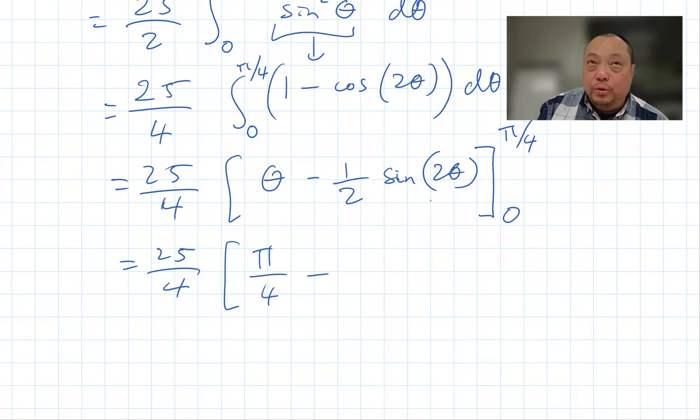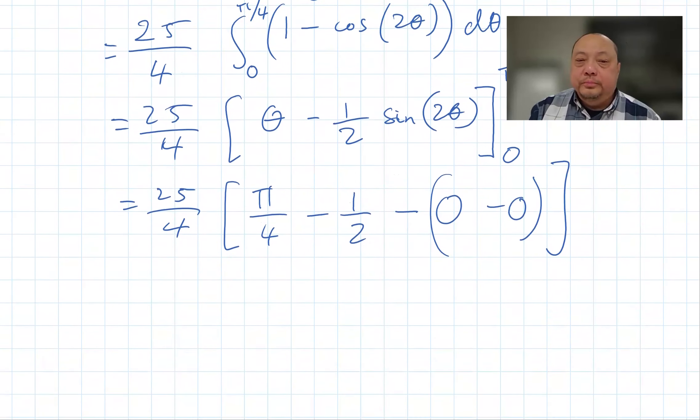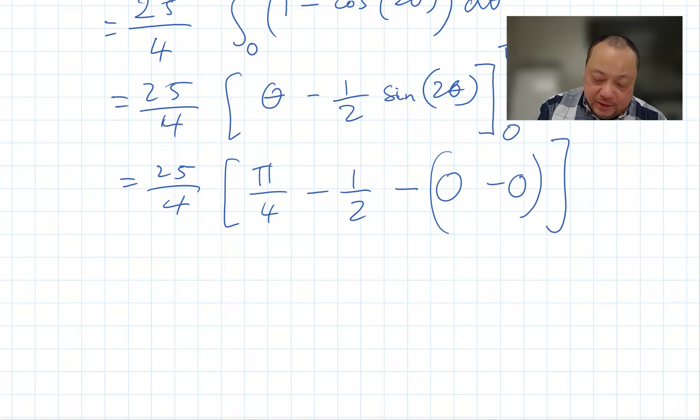From zero to pi over four. So sine of pi over 2 is 1. All of that is zero. I multiplied this out. So that's the area of the bottom half.